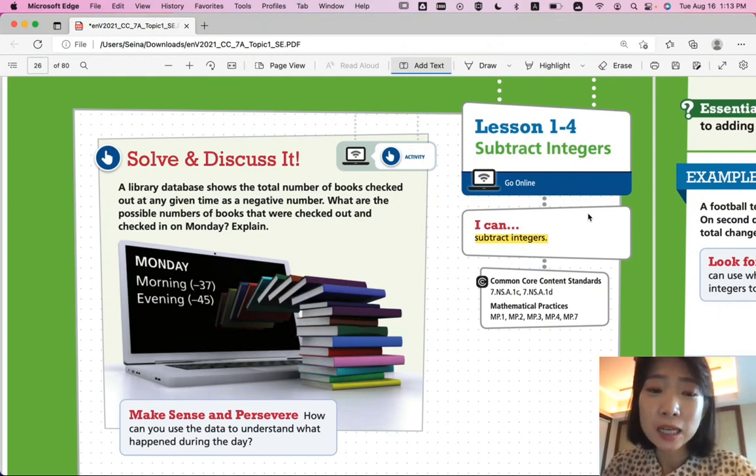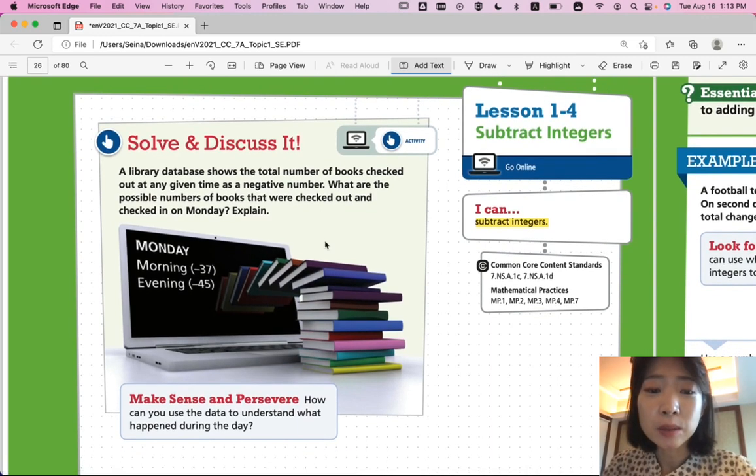Let's start with Solve and Discuss It. A library database shows the total number of books checked out at any given time as a negative number. What are the possible numbers of books that were checked out and checked in on Monday? Explain.